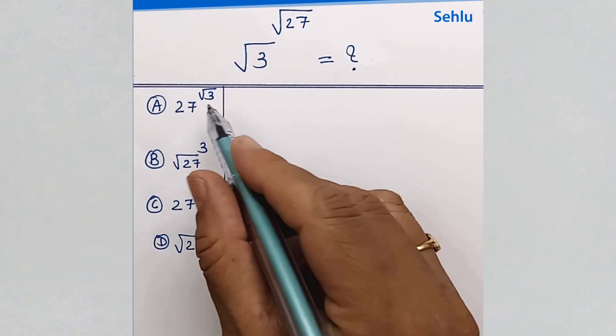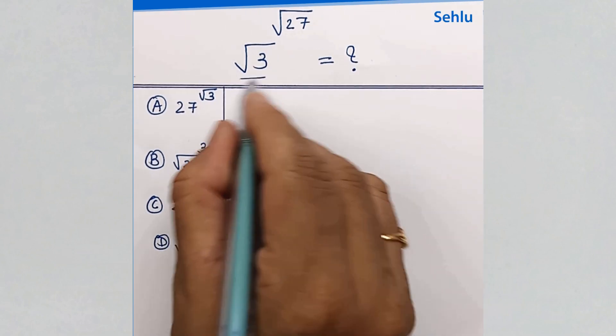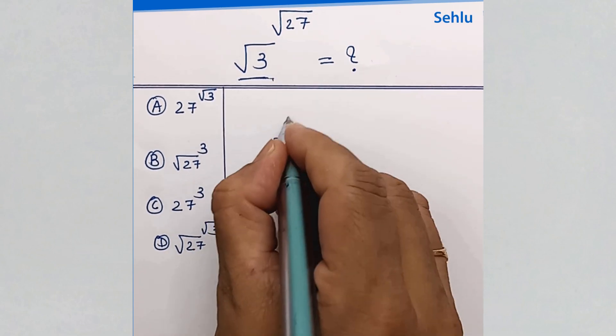We need to find the equal value from the options. Square root 3 can be written as 3 to the power 1 over 2.